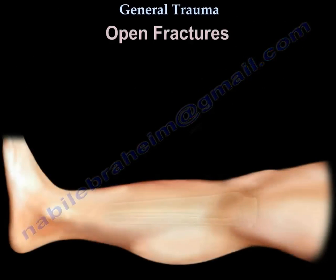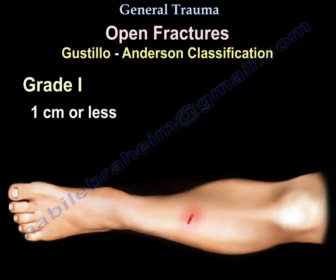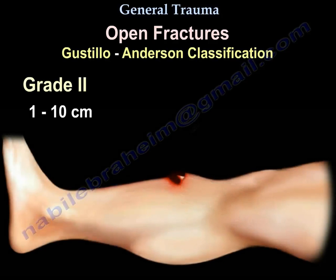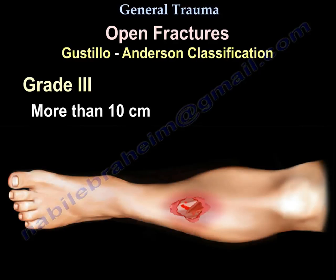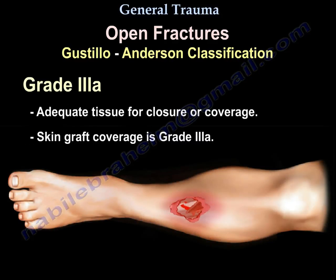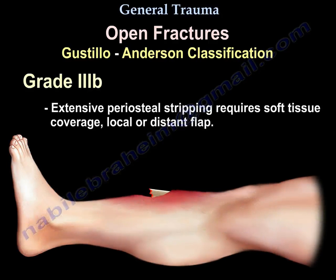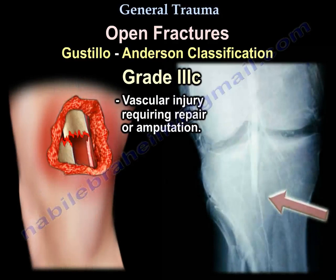Open fracture classification: Grade 1 has a wound of one centimeter or less; Grade 2 is one to ten centimeters; Grade 3 is more than ten centimeters. Grade 3 is subdivided: 3A has adequate tissue for closure or coverage; 3B involves extensive periosteal stripping requiring soft tissue coverage with a local or distant flap; 3C involves a vascular injury requiring repair or amputation.